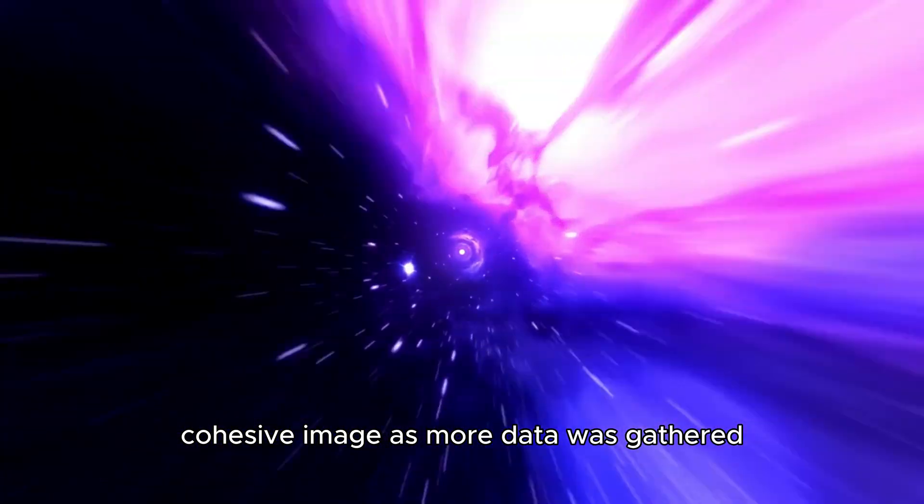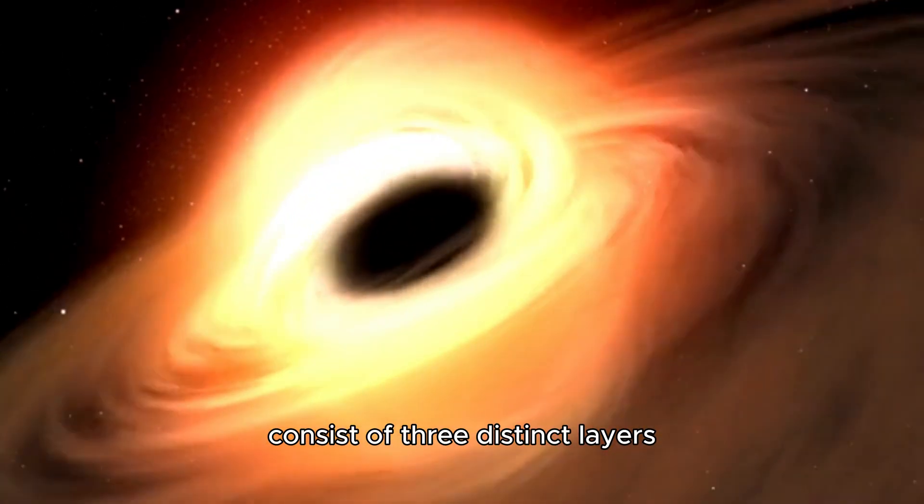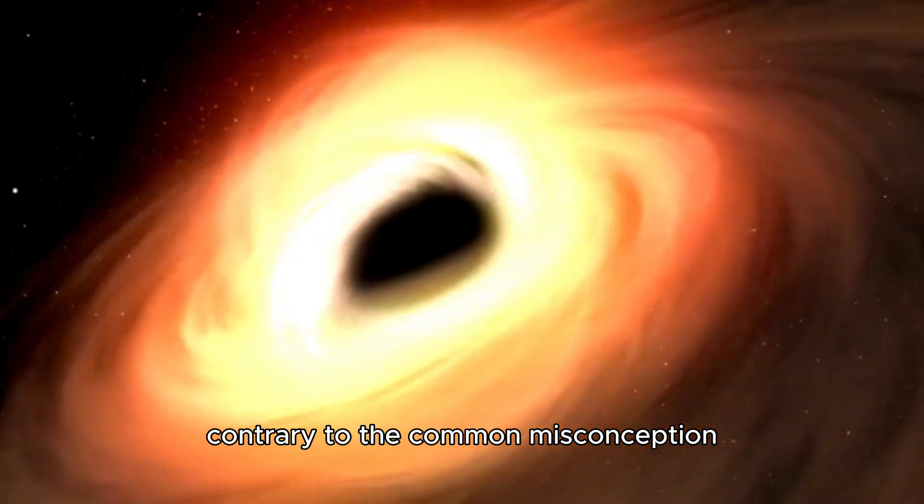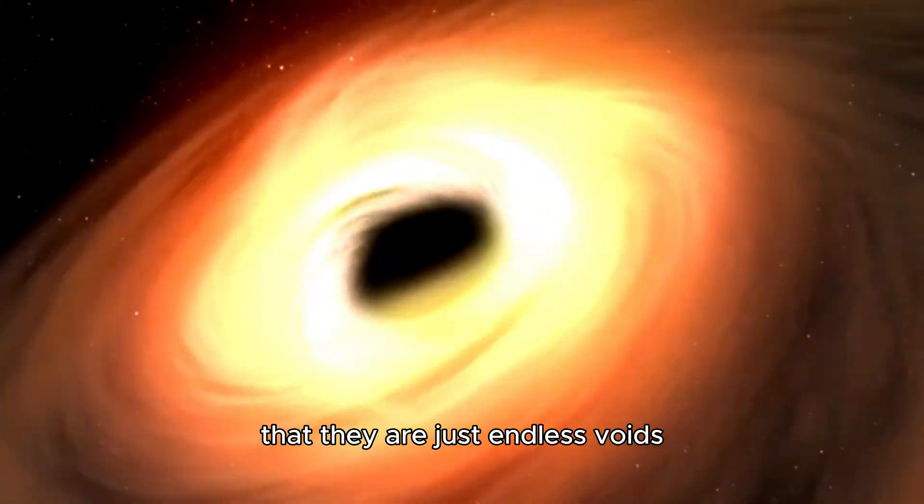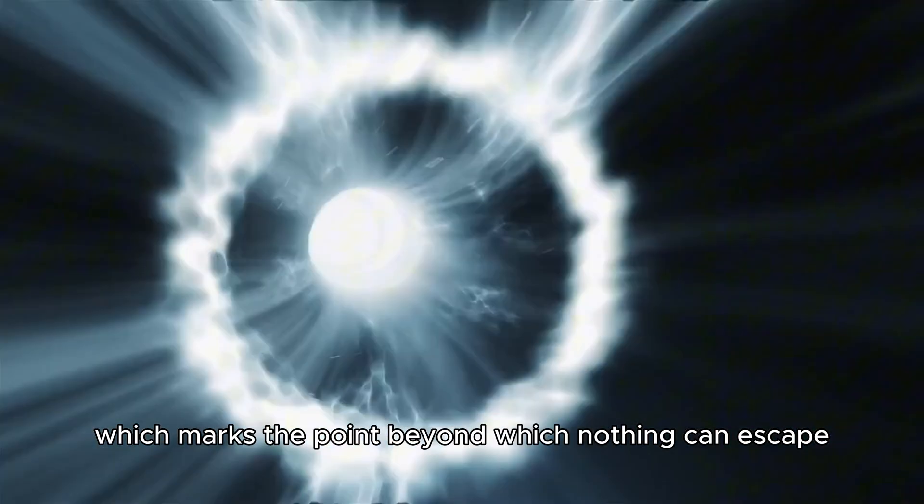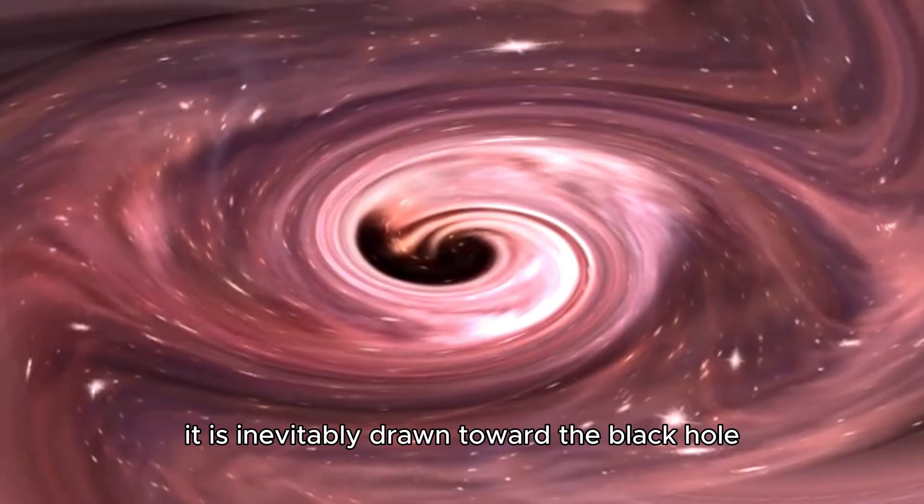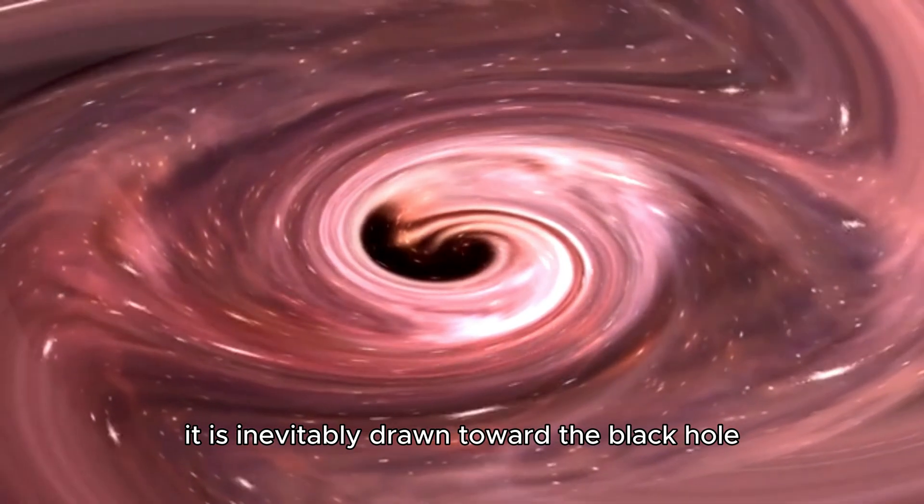As more data was gathered, researchers were able to discern that black holes consist of three distinct layers. Contrary to the common misconception that they are just endless voids, the first of these layers is called the event horizon, which marks the point beyond which nothing can escape. Once something crosses this boundary, it is inevitably drawn toward the black hole.